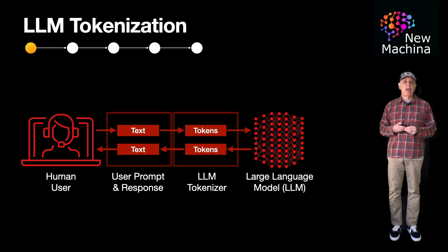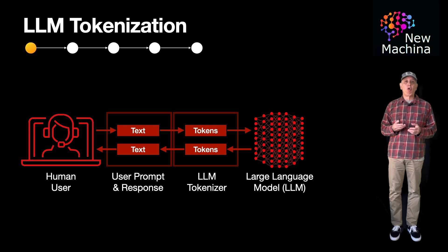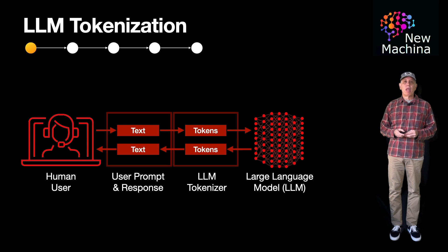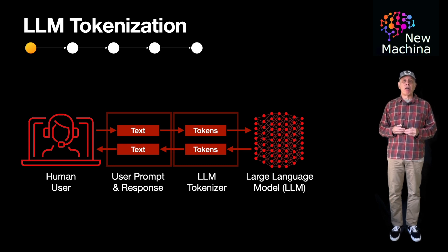The LLM then processes these input tokens and generates a response in the form of output tokens. The LLM tokenizer then converts the output tokens back into text that the user can understand. Tokenization helps the LLM by reducing the complexity of text data, making it easier and faster for the language model to analyze and generate responses.